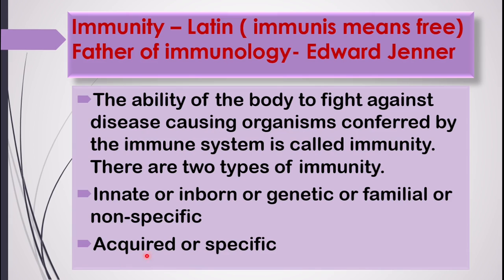The second type of immunity is known as acquired or specific immunity. Acquired immunity means something that we have acquired in our lifetime, not something we have inherited. It is specific for a particular disease — for chickenpox one type, for smallpox another, for common cold another, for cholera another, and so on.